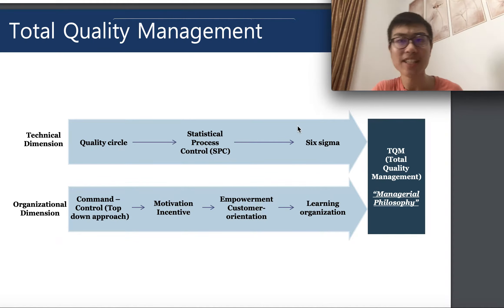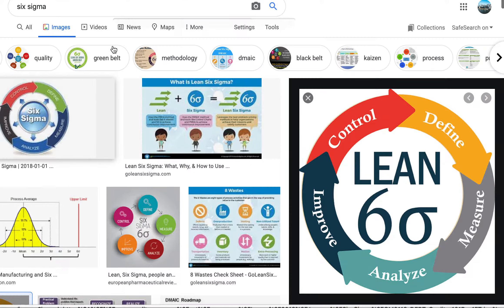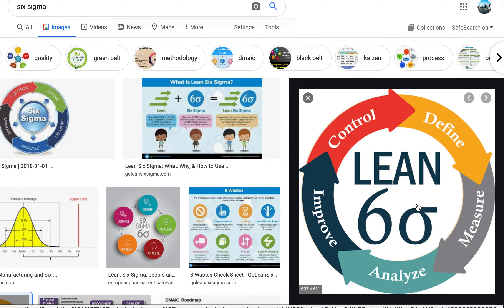The definition of Six Sigma is straightforward: it is the use of a series of techniques and processes in order to identify and prevent future or potential errors and defects in your product.